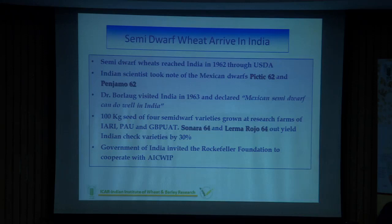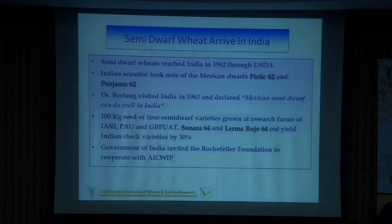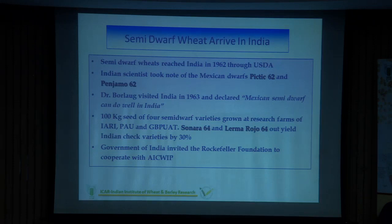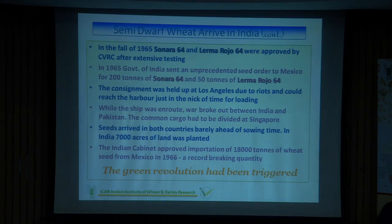Semi-dwarf varieties were introduced in 1962 and planted at the IARI station. Dr. Borlaug himself visited India the next season when these two lines were found to be very promising and said the Mexican dwarfs can do better in India. India started importing seeds of these lines from Mexico. These lines were evaluated and found to be high-yielding — they out-yielded Indian varieties by at least 30 percent. This coincided with the inception of the AICWRIP coordinated system in India. After recommendations from Borlaug and other wheat scientists, two Mexican lines were approved for cultivation in India.